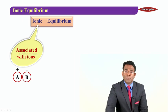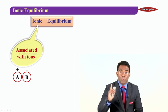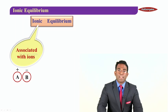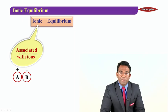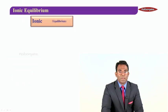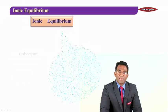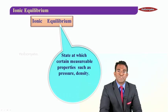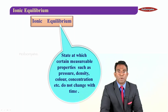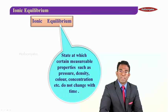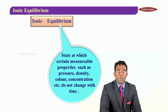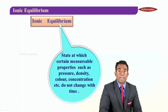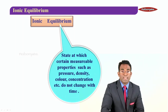The second word in the chapter name is equilibrium, which we already studied in the previous chapter called chemical equilibrium. Equilibrium is a state at which certain measurable properties such as pressure, density, color, concentration, etc. do not change with time. That state is called equilibrium.